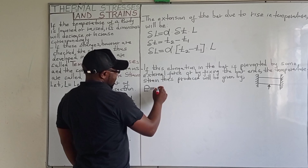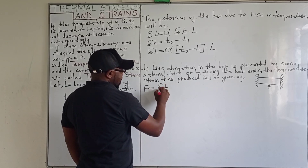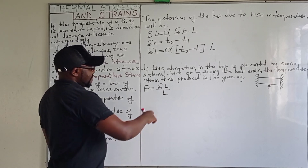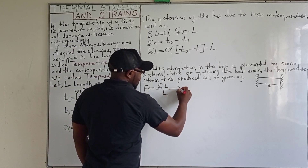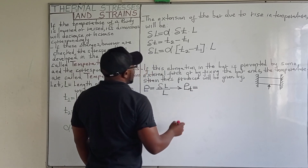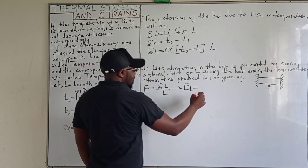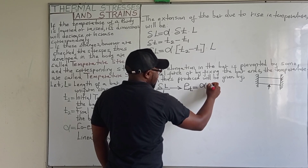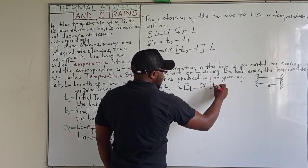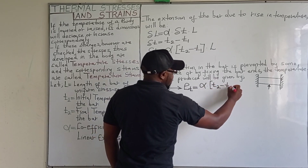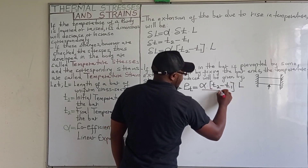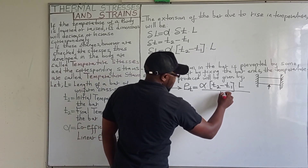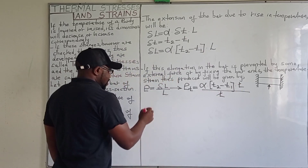We know that strain is given by change in length divided by the original length. Therefore, the temperature strain will be given by: the change in length is the coefficient of linear expansion times the change in temperature T2 minus T1, multiplied by L, then divided by the original length.